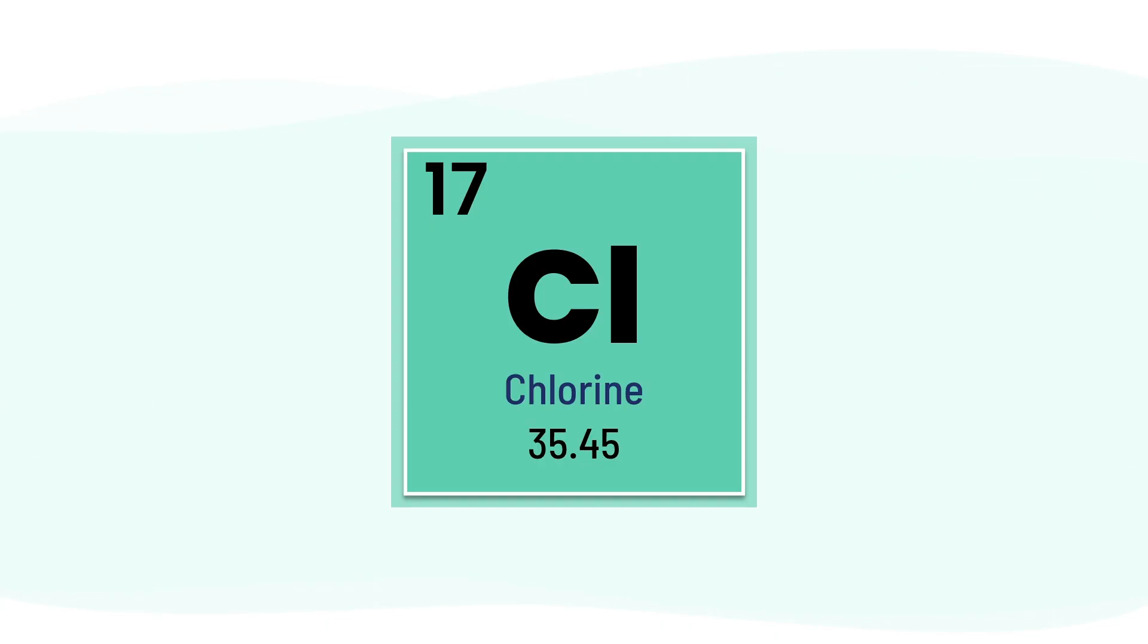Let's take a closer look at the element tile for chlorine. You'll see two important numbers that tell us a lot about the atom. The number at the top, 17, is the atomic number. This tells us chlorine has 17 protons. That's what makes it chlorine. No other element has exactly 17.